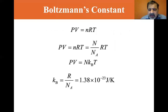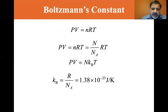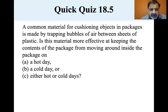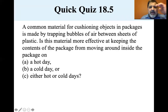The capital N here is the total number of molecules. So PV equals N times kB times T, where N is the total number of molecules. A common material for cushioning objects in packages is made by trapping bubbles of air between sheets of plastic.